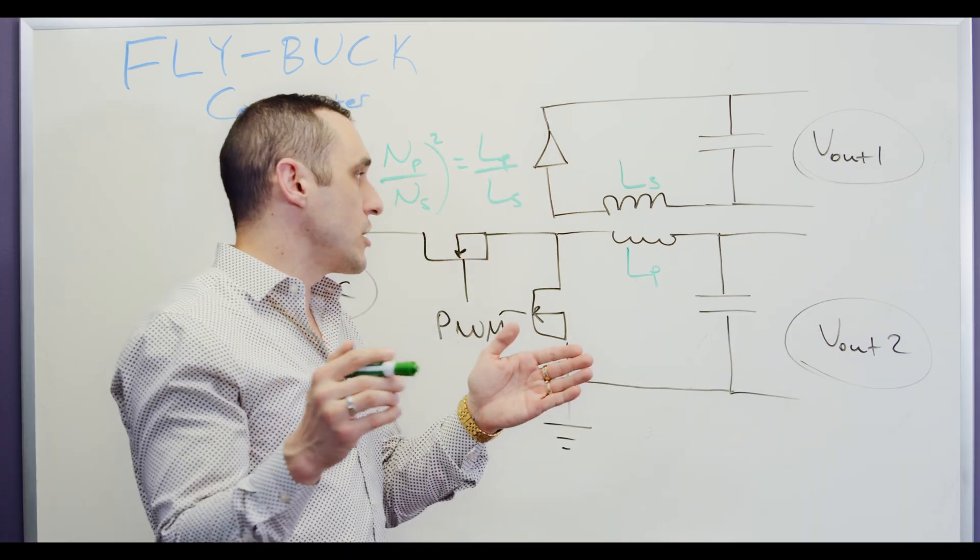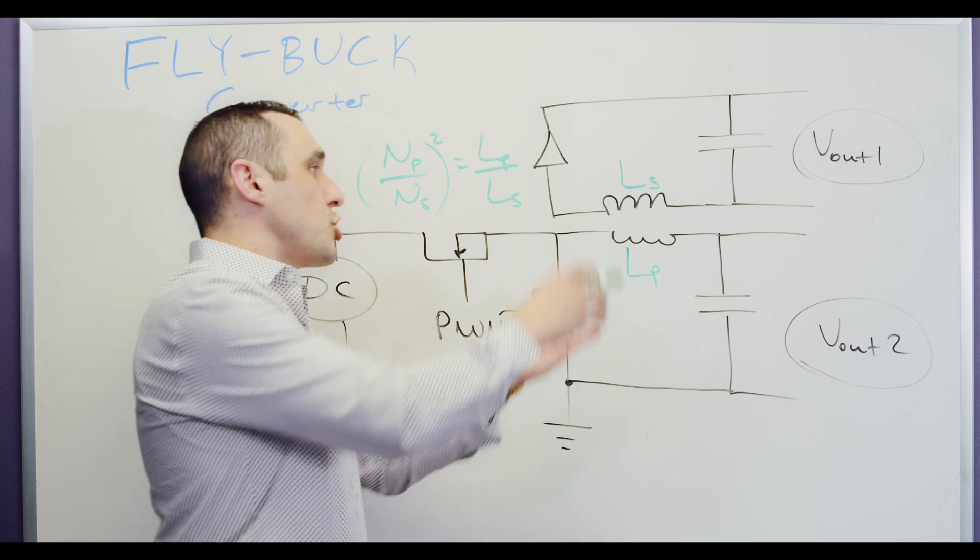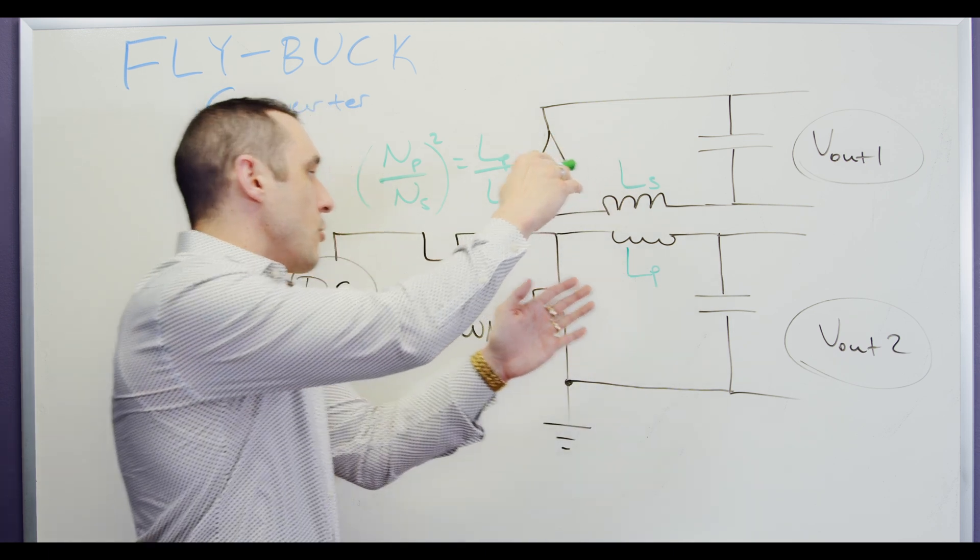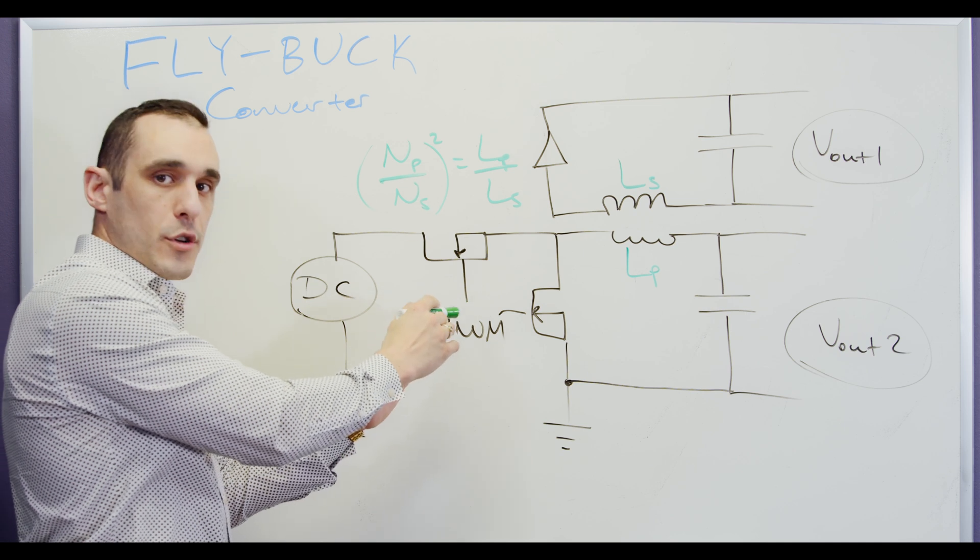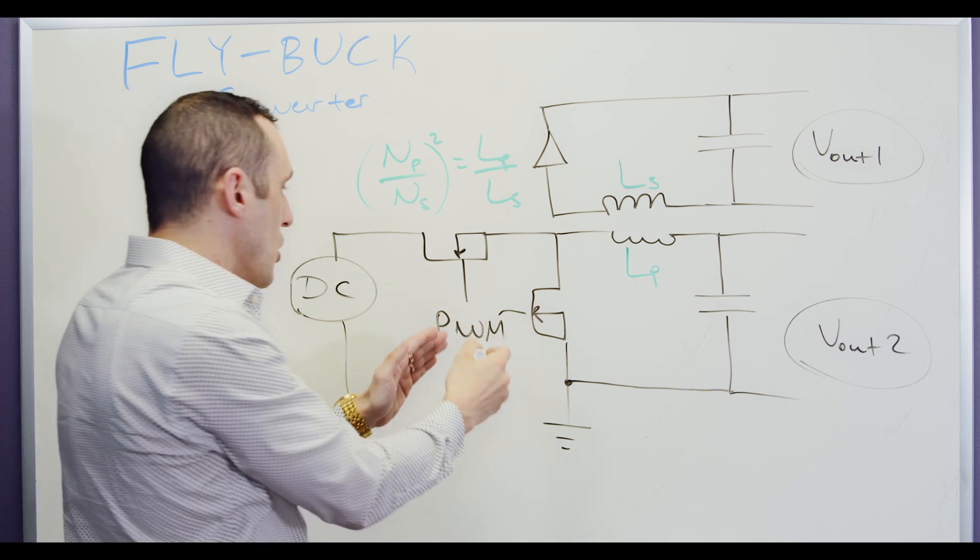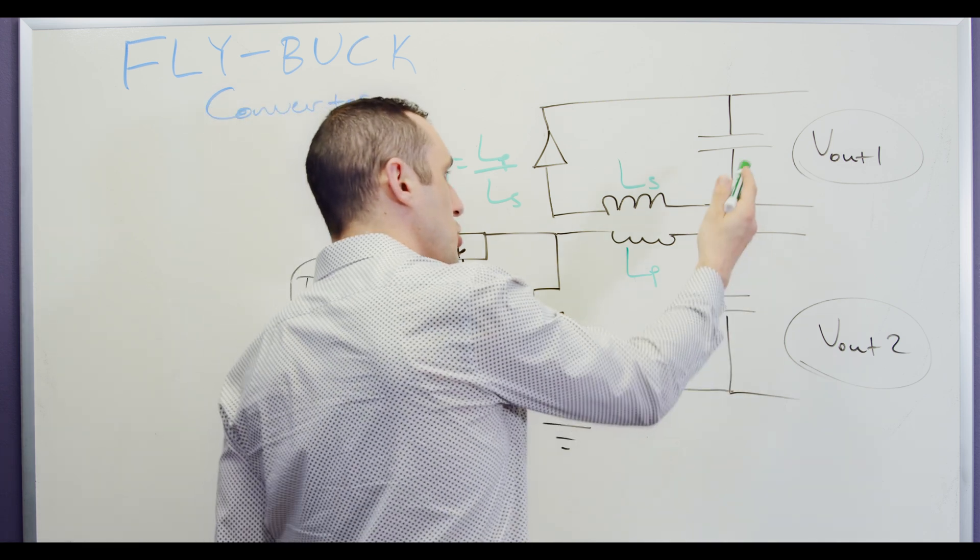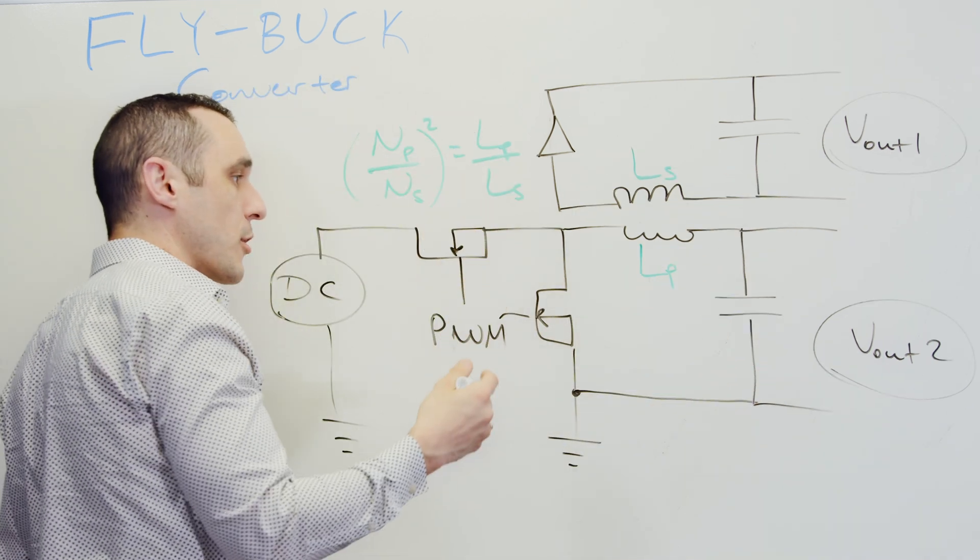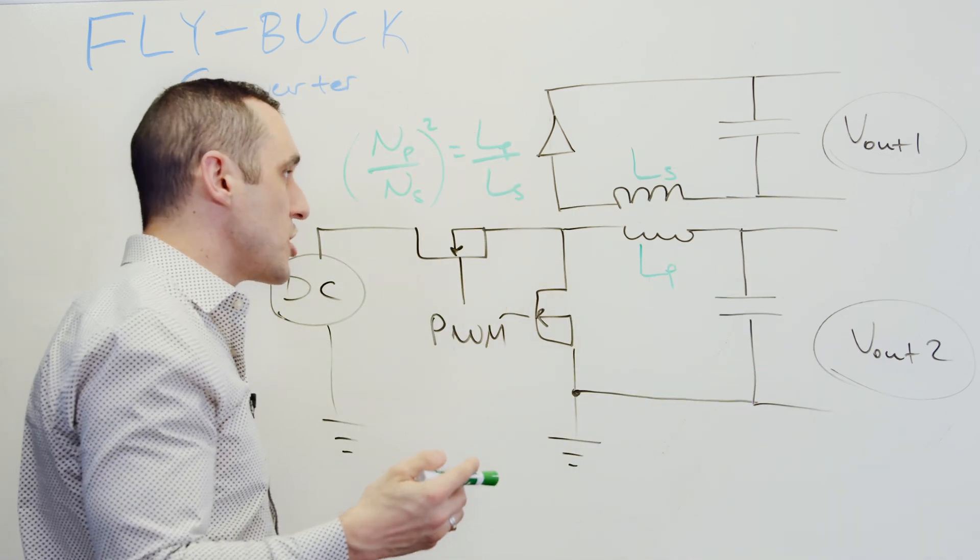So this is a great topology for generating two different voltage rails with a single switching converter or a switching circuit. So here I can essentially just set these two values just with the transformer and they're always going to have the same ratio.